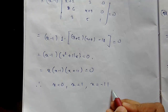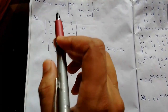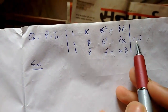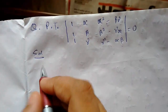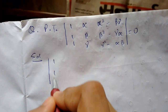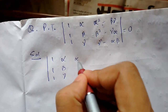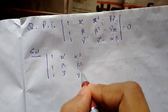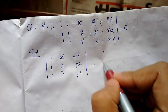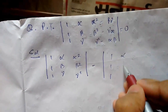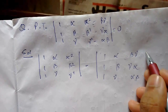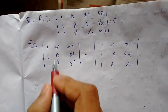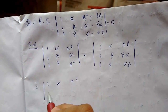The next problem: we need to prove the determinant equals 0. To do this, we will split it into two determinants. Continuing: 1 1 1 / α β γ / α² β² γ² minus 1 1 1 / α β γ / βγ αγ αβ.